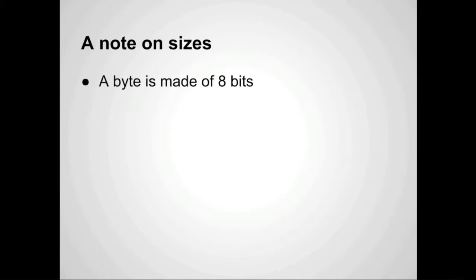A byte is made of eight bits, and a bit is the basic unit of information in a computer — it's a one or a zero. It's based off a physical electronic switch, and there's a whole mess of those in your computer. Eight bytes is a double, which leads to the wonderful joke: eight bytes walk into a bar, look at the bartender, and say 'make us a double.'